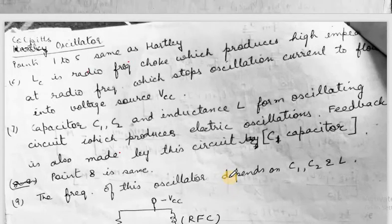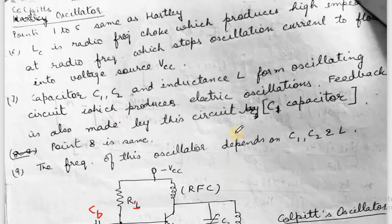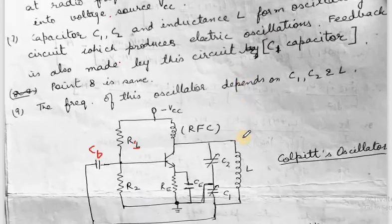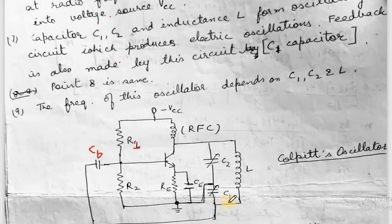Next we have a radio frequency choke coil placed in the collector circuit. The LC produces high impedance at radio frequency which stops oscillation currents from flowing into the voltage source VCC, blocking the flow of oscillations from the tank circuit to the power supply so that it may not get damaged. C1, C2 and the inductance coil form the oscillating circuit which produces the electrical oscillations, and feedback is made through capacitor C1. The frequency of the oscillator is decided by C1, C2 and L.